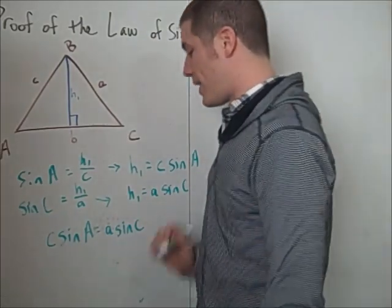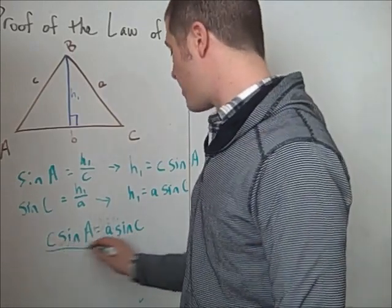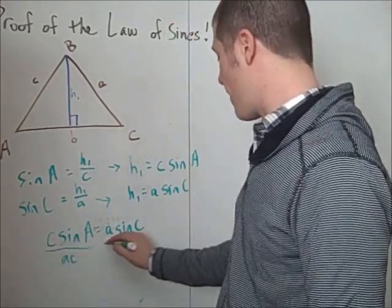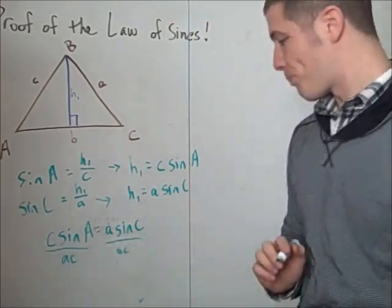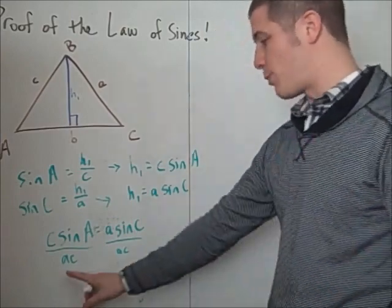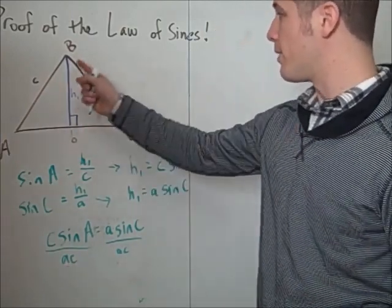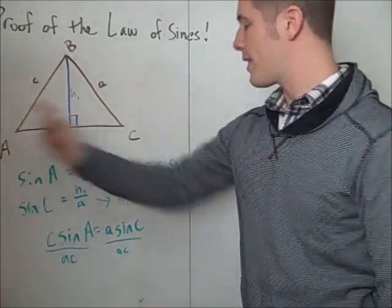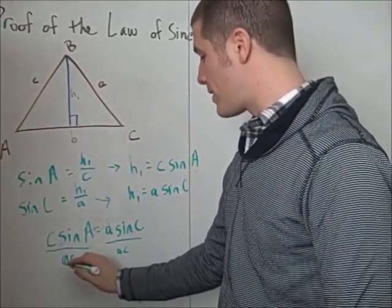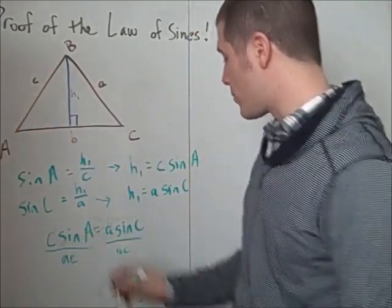And now we divide both sides by the non-zero constant ac. That's the product of little a and little c. Here on the left-hand side, the c's cancel. And here on the right-hand side, the a's cancel.